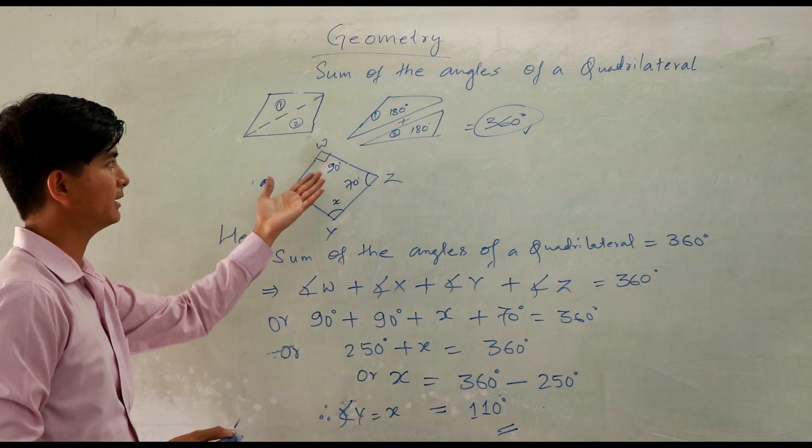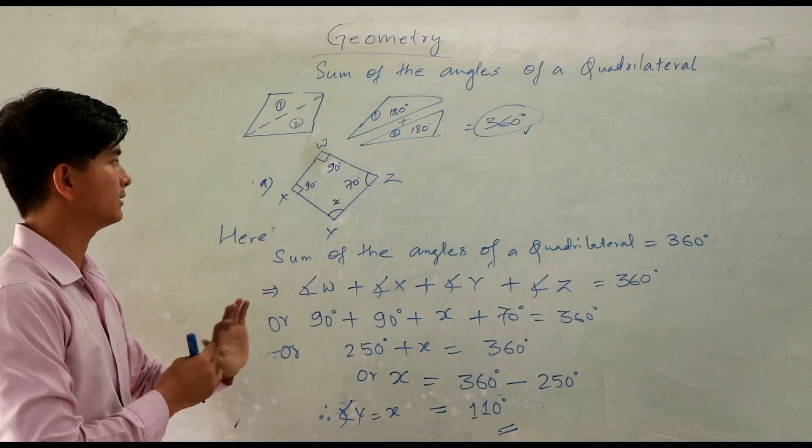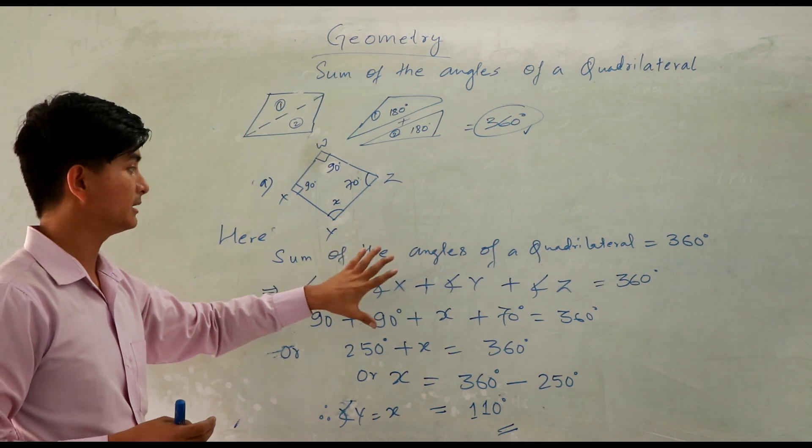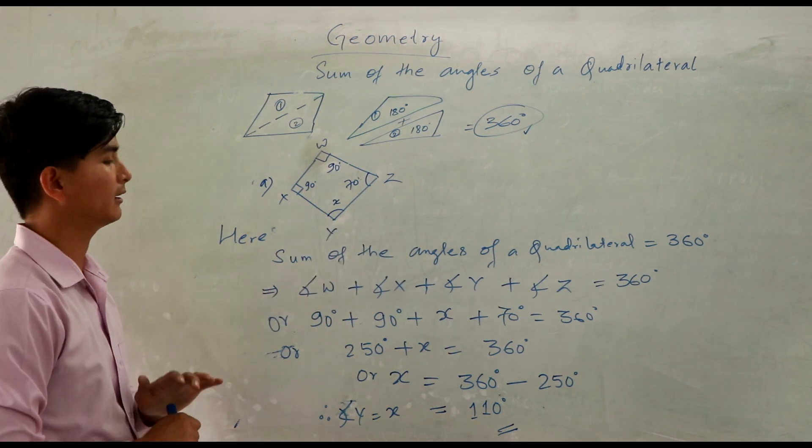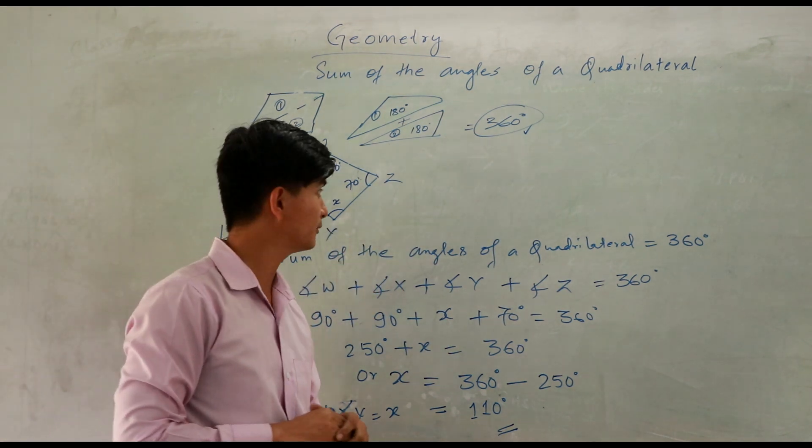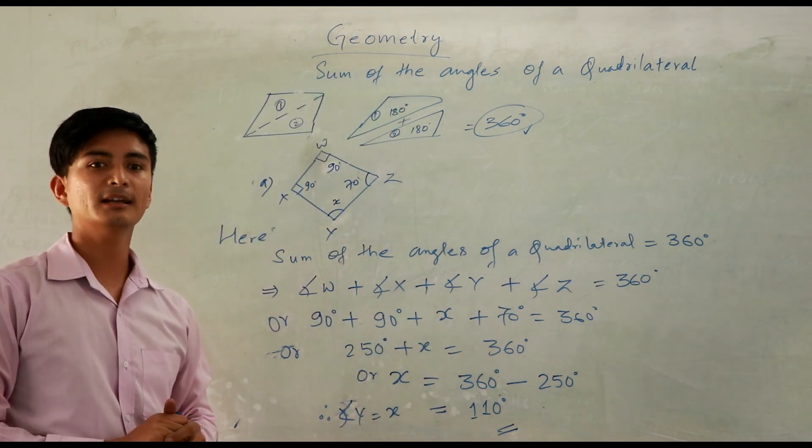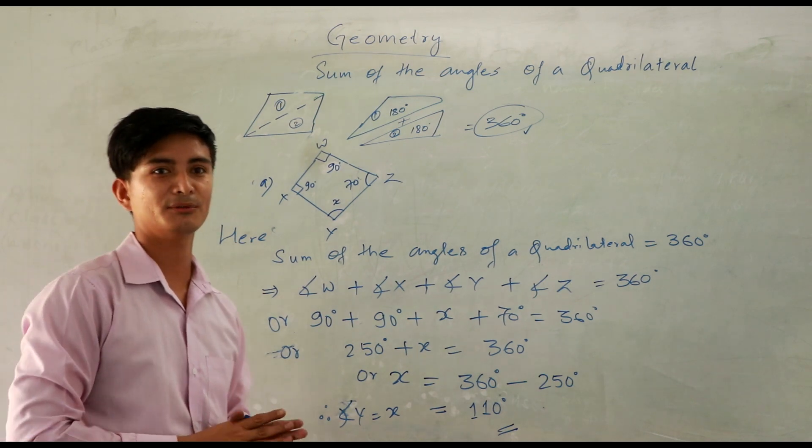Therefore, angle Y, or X, is equal to 110 degrees. Same way, you can find out many other angles in the same manner. I hope you have already understood how to find the missing angle. Thank you.